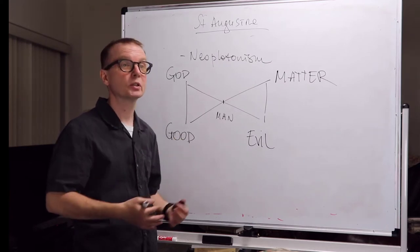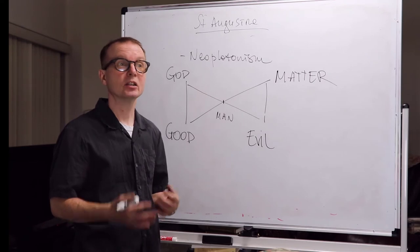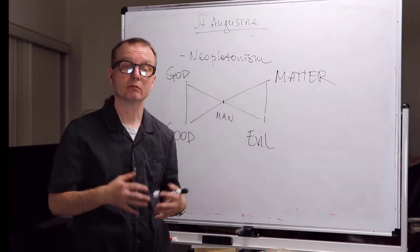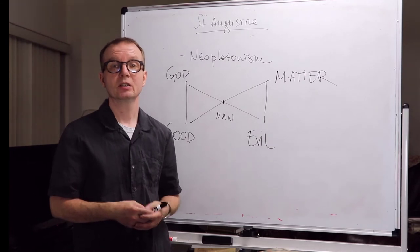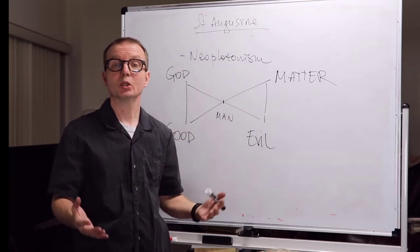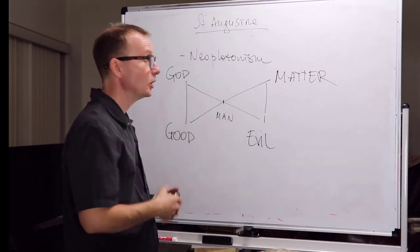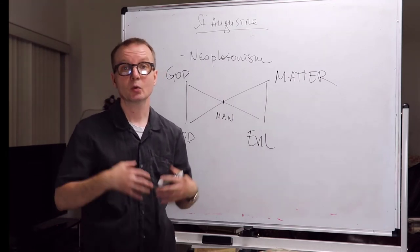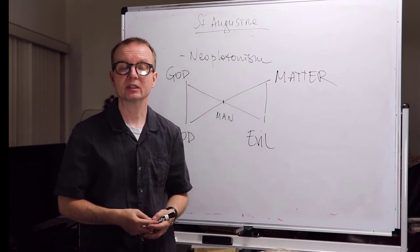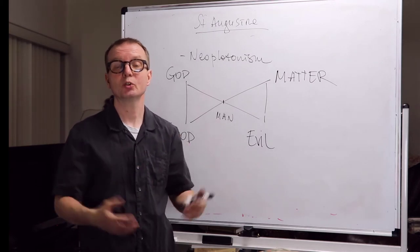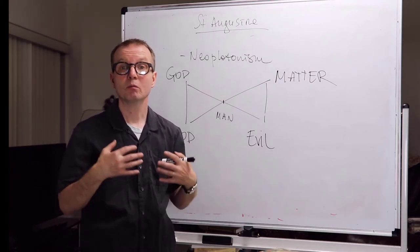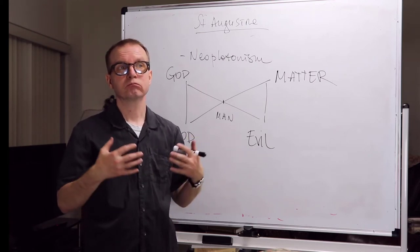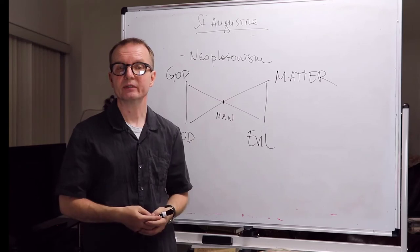He became Christian at the age of 32, and for the rest of his life he wrote extensively. He became a bishop, a bishop of Hippo in 396. He wrote extensively, including his well-known memoir Confessions, where he basically tells us about his life, how he came to Christianity, what moved him, and describes his religious beliefs.